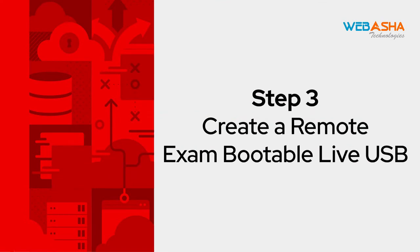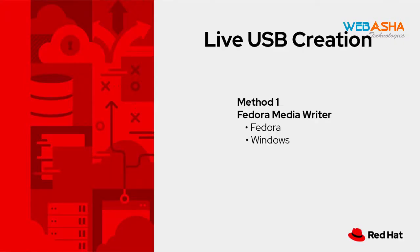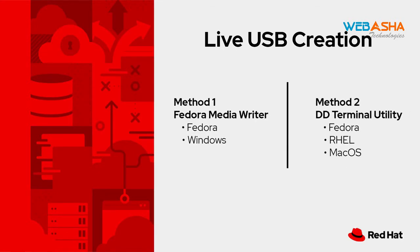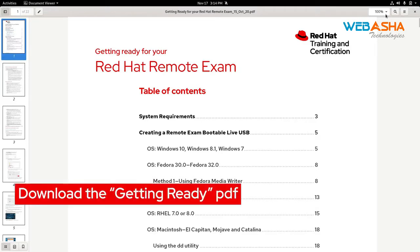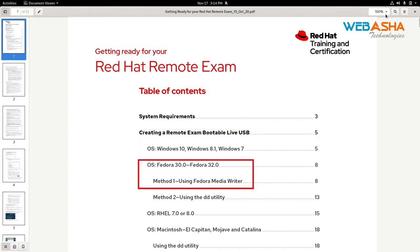Step 3: Create a remote exam bootable live USB. There are two methods to create the live testing environment. Method 1 uses the Fedora MediaWriter, which we recommend for Windows as well as Fedora operating systems. The other method uses the terminal and the dd command, which we recommend for Linux as well as Mac OS X. No matter what system you're running, the first step is to download the Getting Ready for Your Red Hat Exam PDF, which can be found on either redhat.com or the Red Hat Learning Community. I will demo both of these methods using Fedora.